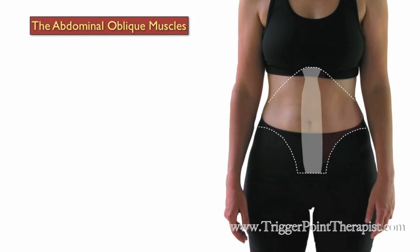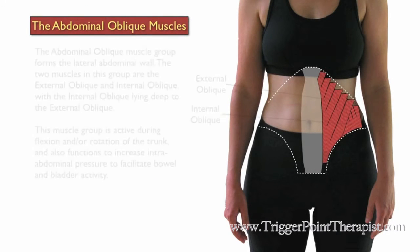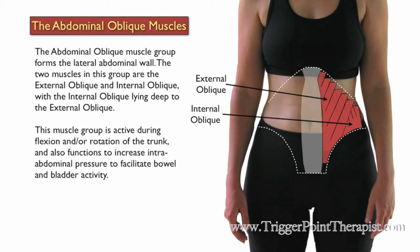The abdominal oblique muscle group forms the lateral abdominal wall. The two muscles in this group are the external oblique and the internal oblique, with the internal oblique lying deep to the external oblique. This muscle group is active during flexion and/or rotation of the trunk, and also functions to increase intra-abdominal pressure to facilitate bowel and bladder activity.